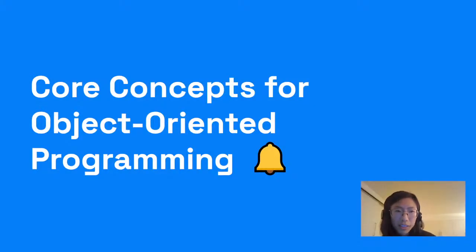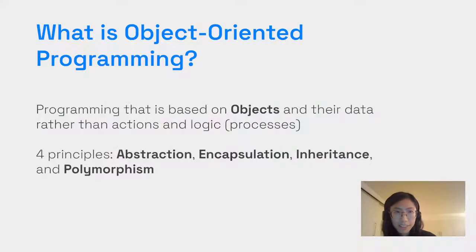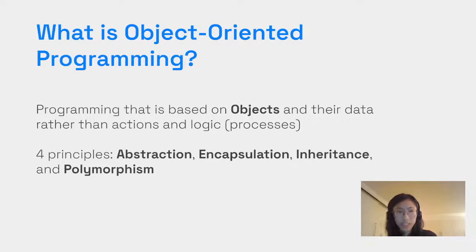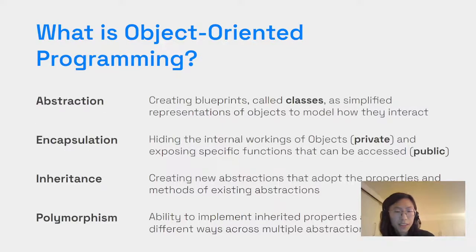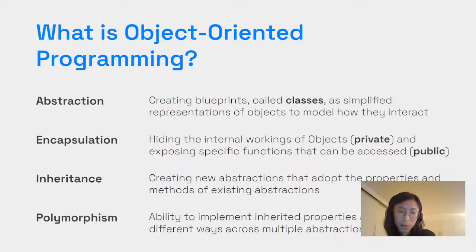Let's look at some core concepts for object-oriented programming. Object-oriented programming is programming based on objects and their data rather than actions and logic. There are four main principles: abstraction, encapsulation, inheritance, and polymorphism. With abstraction, you are creating blueprints — what we call classes — which are simplified representations of objects and model how they interact with each other.